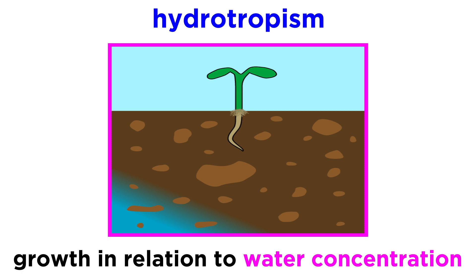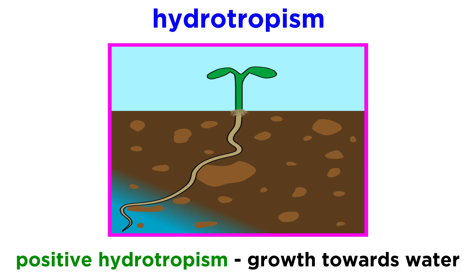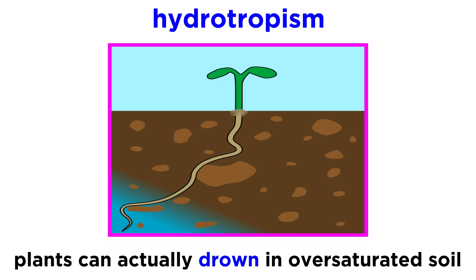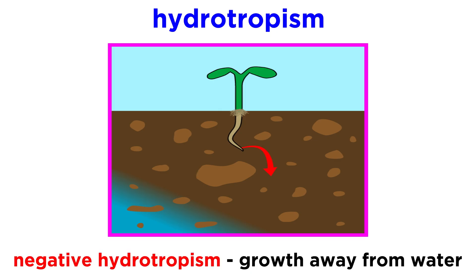Hydrotropism is growth in relation to concentrations of water. Positive hydrotropism causes plant roots to grow towards saturated soil in order to collect water for the plant. But there is also such a thing as having too much water. Plant roots can actually drown in oversaturated soil, so negative hydrotropism causes roots to grow into drier soils.